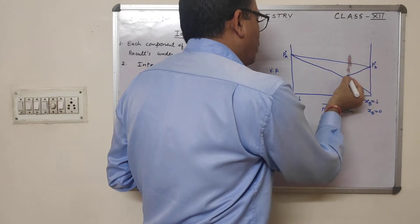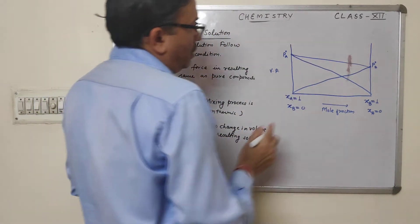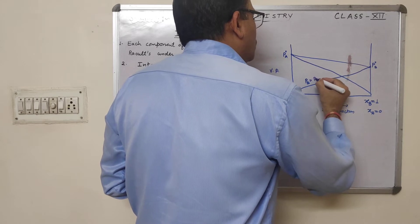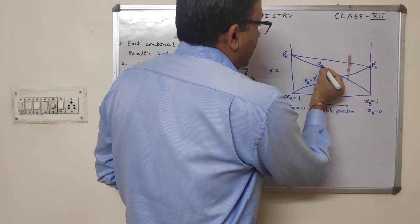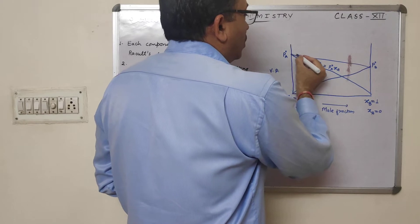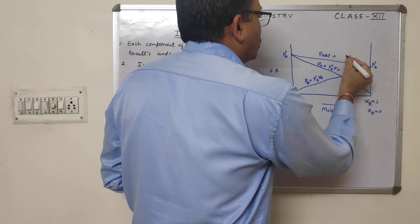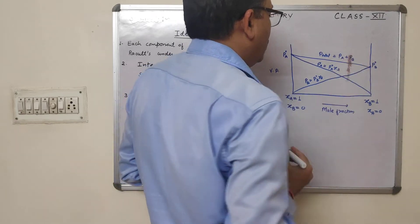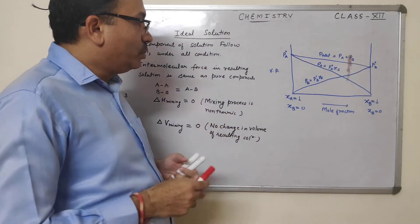Similarly for B, it reaches zero at the other end. At any point, PB = P⁰B · XB, and PA = P⁰A · XA. On the total pressure line, P_total = PA + PB. This is the graphical representation for an ideal solution.